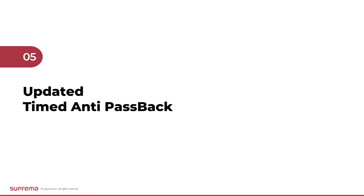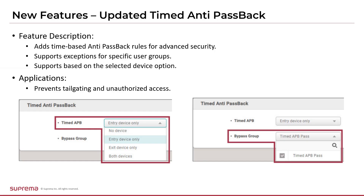Are you making good use of the timed anti-passback feature added in Biostar 2 version 2.9.5? In version 2.9.8, two more features have been added to increase usability and flexibility. Previously, timed APB settings were supported with door information, but from version 2.9.8, settings are supported for each door device. In addition, by adding the bypass group option, it is possible to set a user access group that passes the timed anti-passback rule.